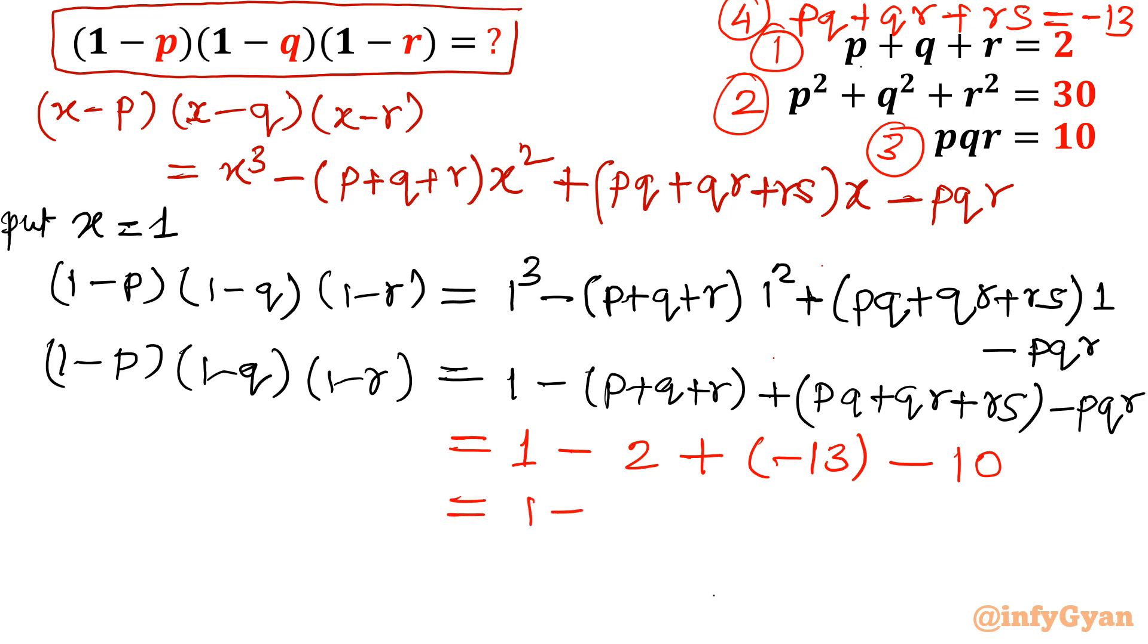Let us put the value. 1 minus 2 plus negative 13 minus 10 equals 1 minus 25. So our final answer becomes minus 24. The expression value will be minus 24. You can see (1-p)(1-q)(1-r) equal to negative 24. And see, this is our final answer.